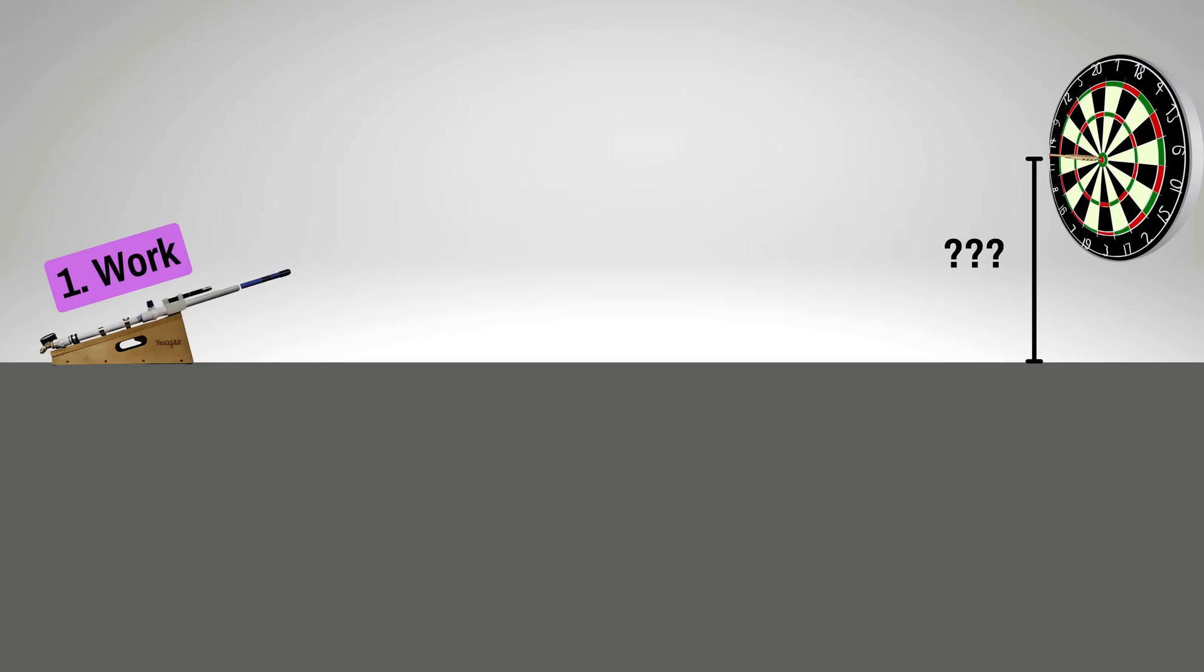To solve for this height, I first estimated the work done on the dart during the expansion, which I then used to determine the dart's exit velocity. Lastly, I solved for the trajectory using Newton's second law to factor in gravity and drag. I've already done similar calculations for these last two parts in previous videos, so I'm going to mostly focus on the work part.